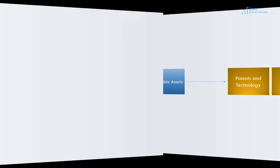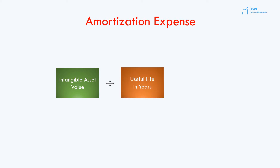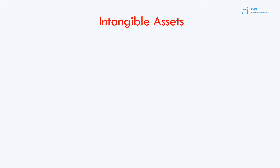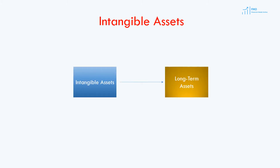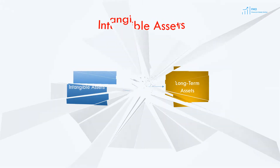Amortization expense is calculated by taking the purchase price of the intangible asset and dividing it by its useful life. Acquired intangible assets appear on the balance sheet as a long-term asset.